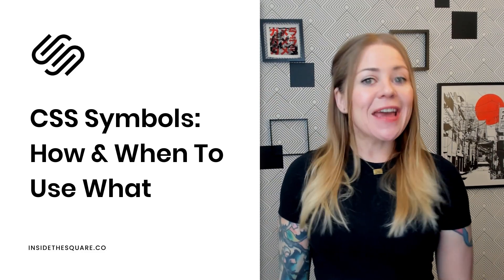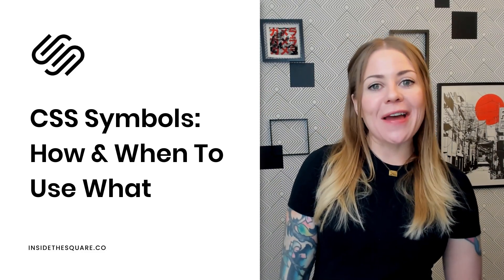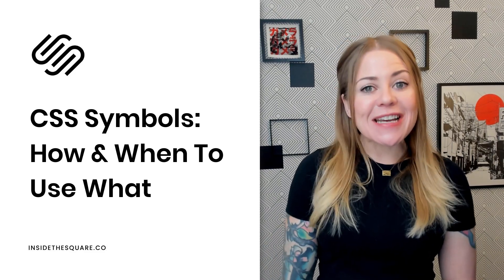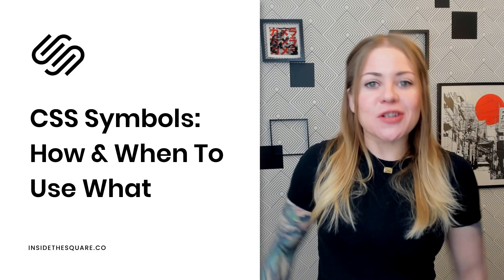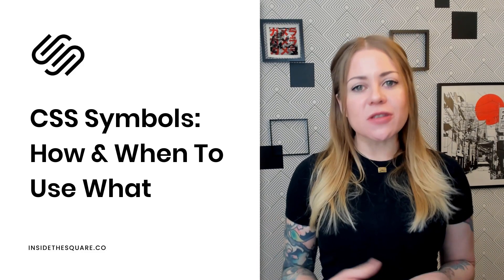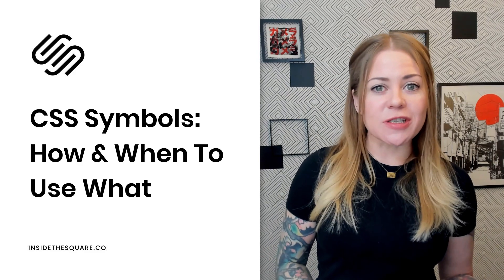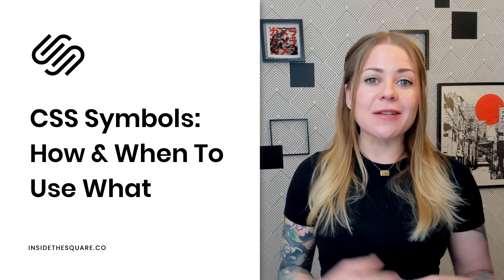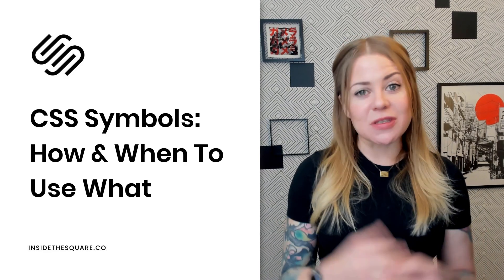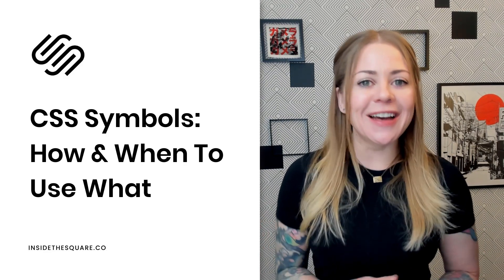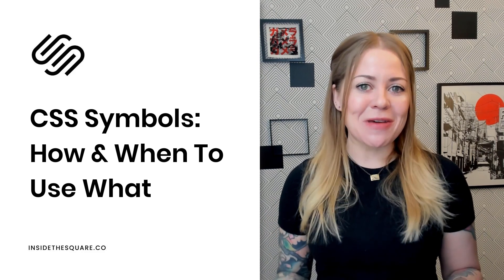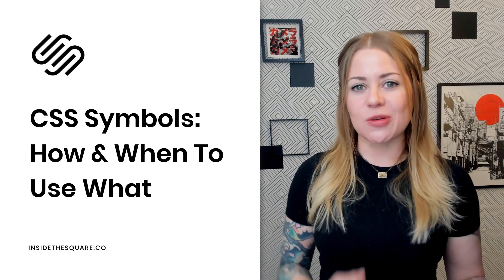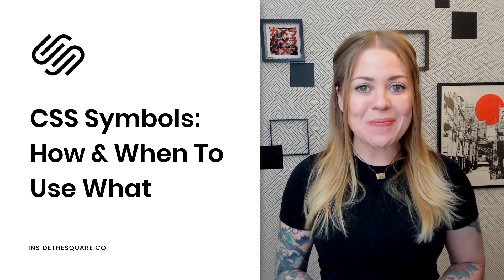Hey there, Becca here from Inside the Square. In my tutorial videos on YouTube, I like to share tips on how to customize a Squarespace website using CSS. CSS is technically a code language, and it uses its own set of symbols to help a computer browser understand how to display the content of a website. You might be aware of things like properties, values, and selectors. But there are a lot of symbols that we use, and I wanted to create this video to show you exactly what they are and when you're going to encounter them.